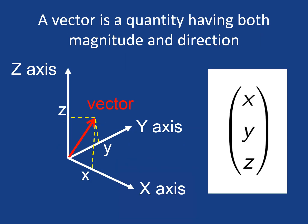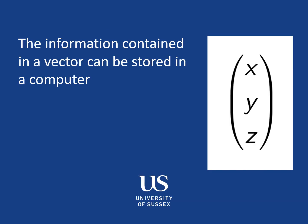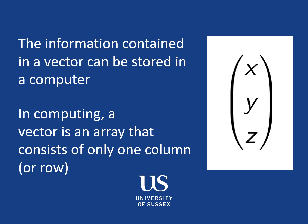A vector is a quantity that has both magnitude and direction. So if you imagine a helicopter taking off with a certain velocity, we can think of that in terms of maybe x, y and z components of that velocity. We can use these three numbers to make a vector, and this information can easily be stored in a computer. In a computer, a vector is an array that consists of only one column or one row of information.